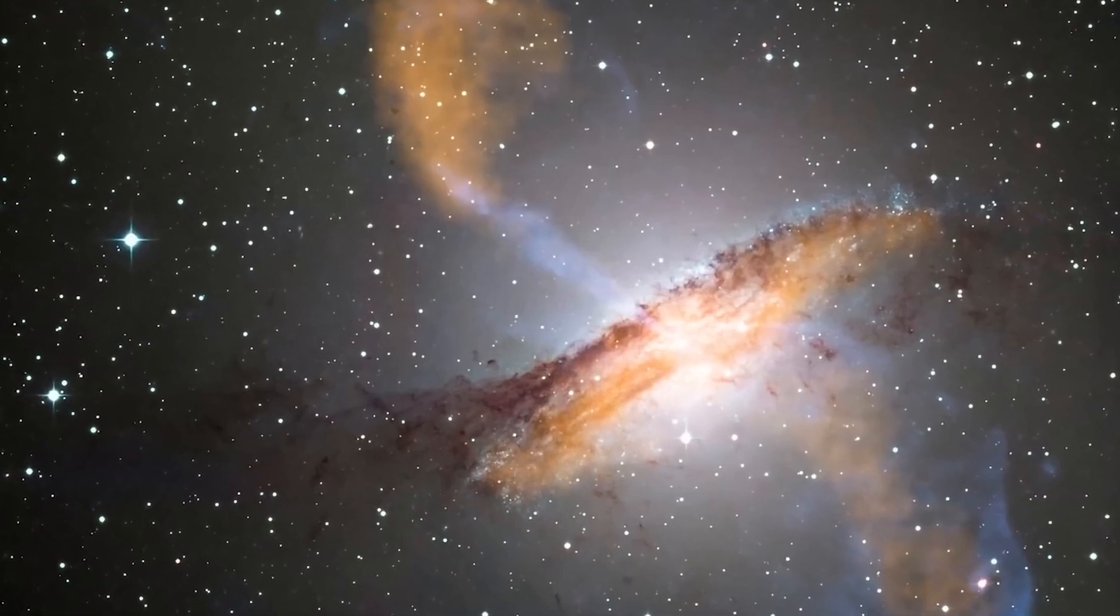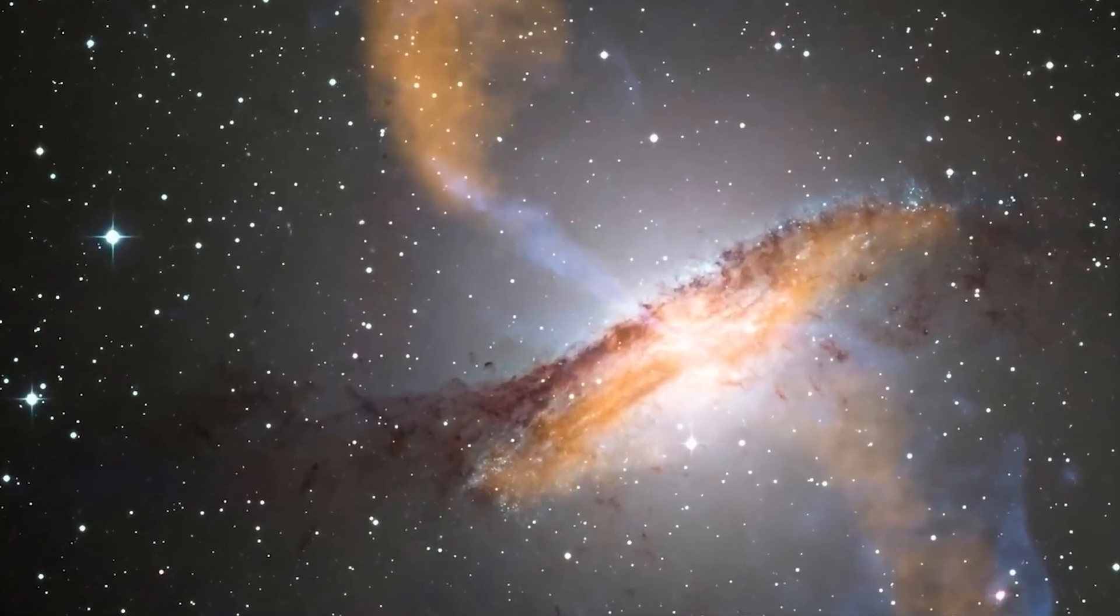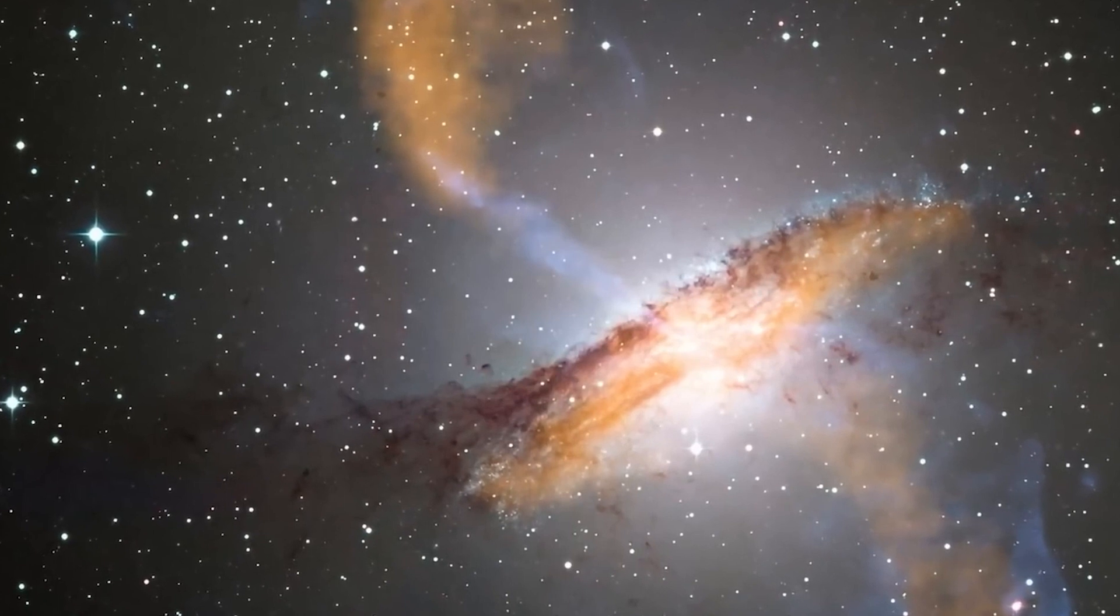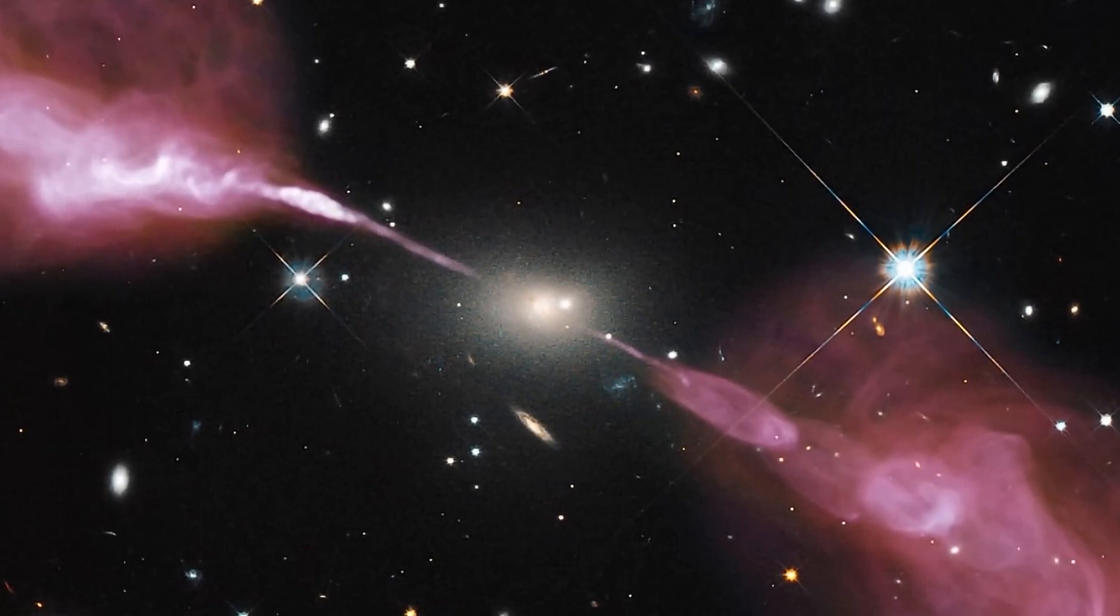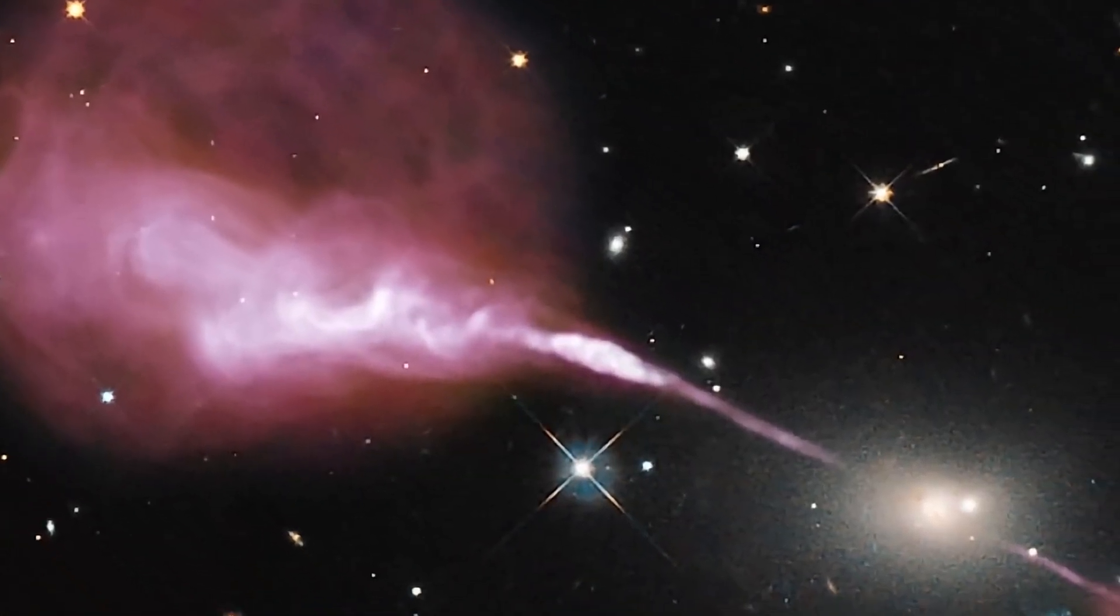Let us explain this in simpler terms. Imagine you have a magical pair of glasses that can see through walls. A radio map is kind of like that, but instead of walls it lets you see through space. It shows the radio waves from different corners of the galaxy, like creating a cosmic blueprint.